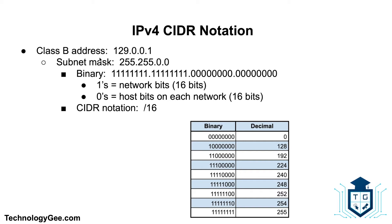Here is an example of a Class B address: 129.0.0.1. Being a Class B address, its default subnet mask is 255.255.0.0. The binary equivalent is 16 ones — representing the network bits — followed by 16 zeros representing the host bits you can assign to devices. The CIDR notation is slash 16, indicating the first 16 bits have been turned on.